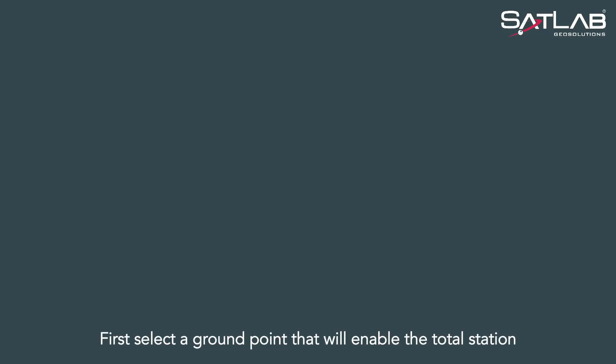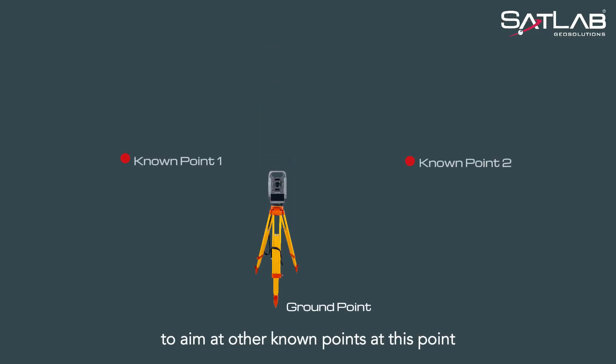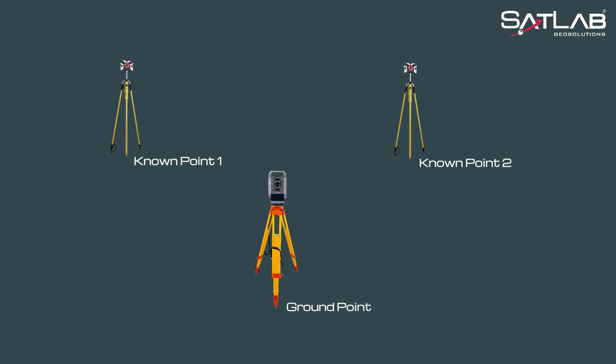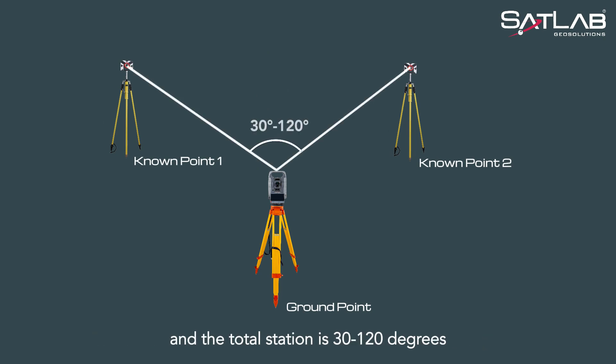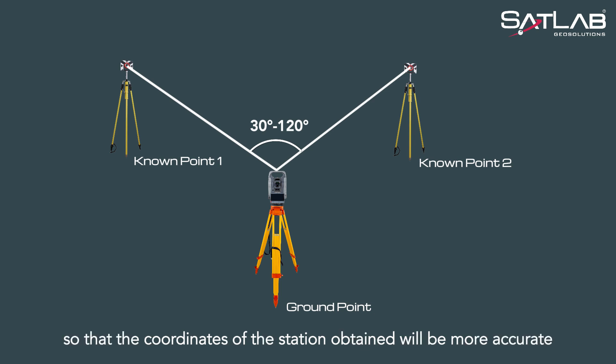First, select a ground point that will enable the total station to aim at other known points. Make sure that the angle between the two known points and the total station is 30 to 120 degrees, so that the coordinates of the station obtained will be more accurate.